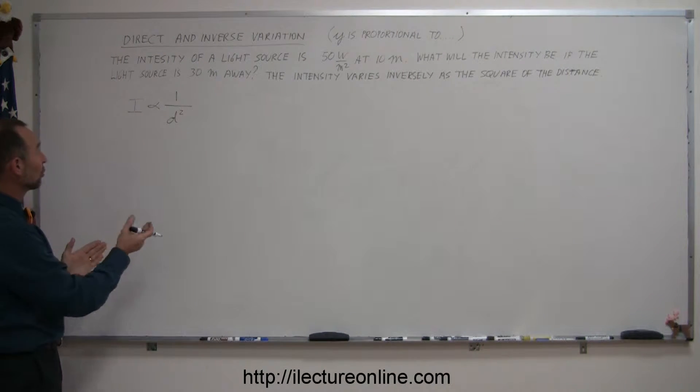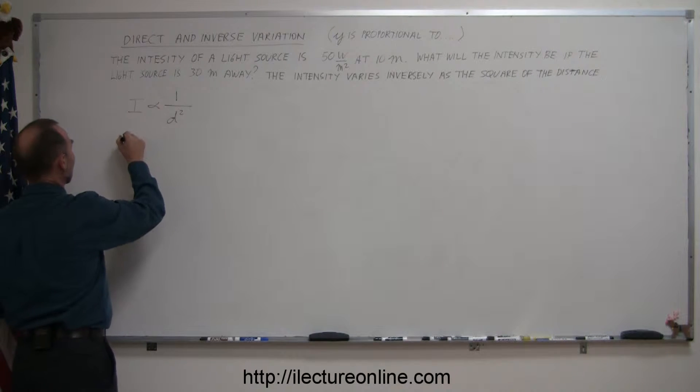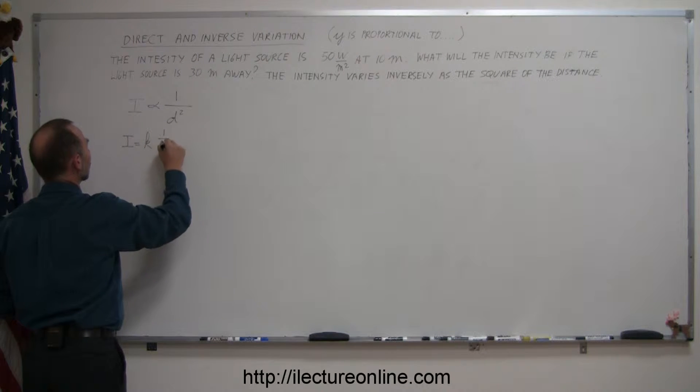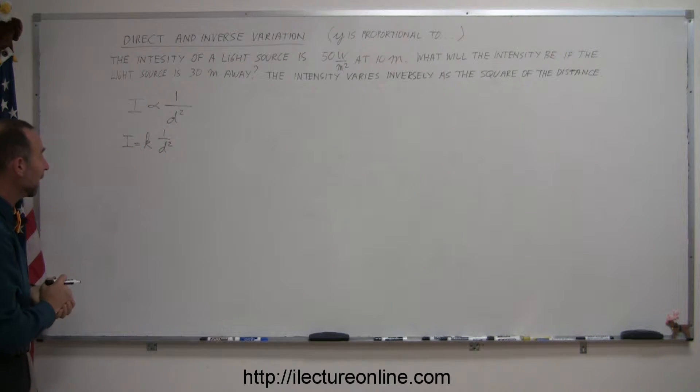Now we're going to change it into an equation, we're going to add a constant of proportionality, so we can now write that I is equal to k times 1 over the distance squared. So to change this into an equal sign, you have to multiply the right side by k, and now the question is what is k equal to?